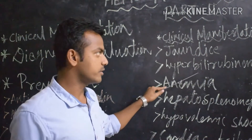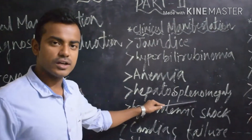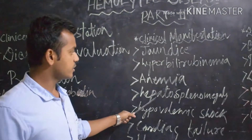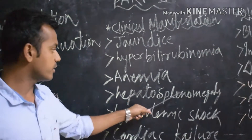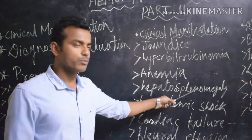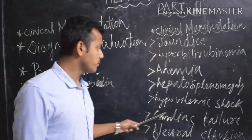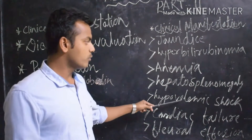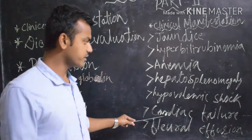Anemia occurs due to the breakdown or destruction of red blood cells. Next is hepatosplenomegaly — hepatosplenomegaly means enlargement of the spleen and liver.